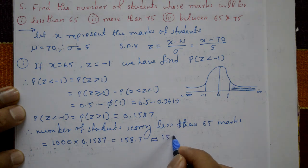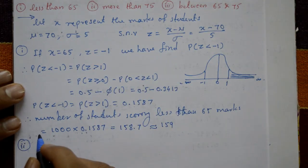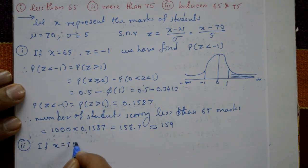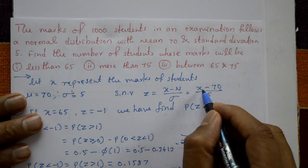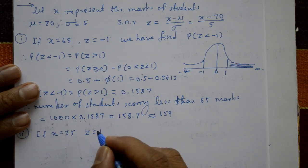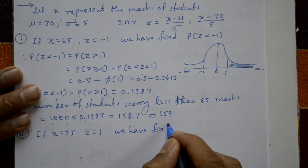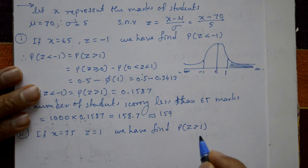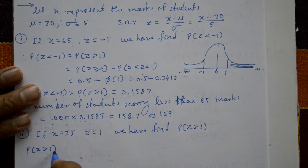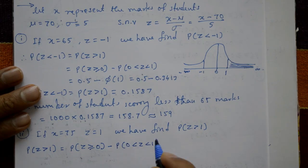Case 2: More than 75 marks. If X = 75, then Z = (75 − 70) / 5 = 1. So we need to find P(Z > 1), which equals P(Z ≥ 0) − P(0 < Z < 1).